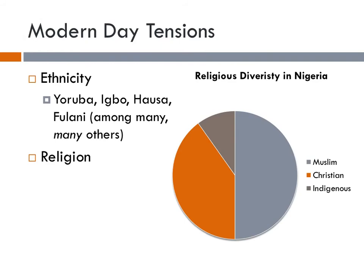The challenges presented by the multiplicity of ethnicities, tribes, societies, and cultures in Nigeria are exacerbated by the variety and diversity of religions. As you can see from the pie chart, about 50% of the nation today is Muslim, 40% claim to be Christian, and about 10% still adhere to indigenous tribal faiths — the tribal faiths, actually, that are portrayed beautifully in Things Fall Apart.